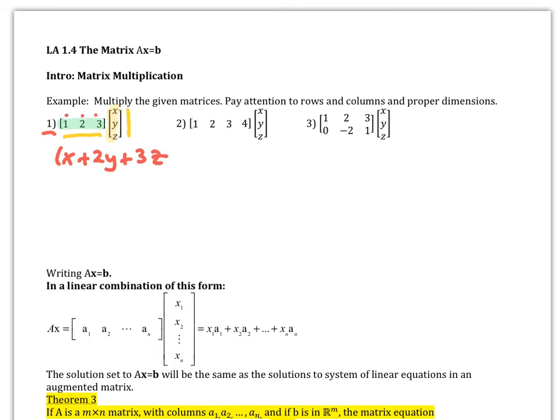So 1, 2, 3, and respectively 1, 2, 3. We just multiply the respective pieces together. That's all we're doing.